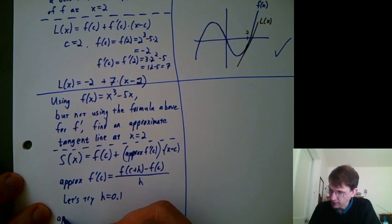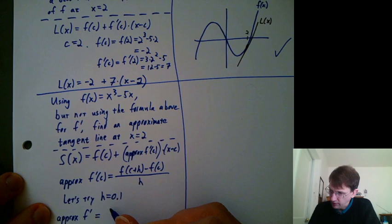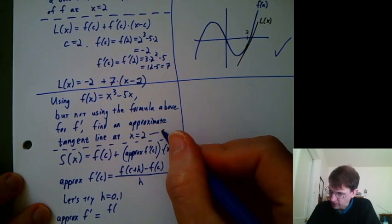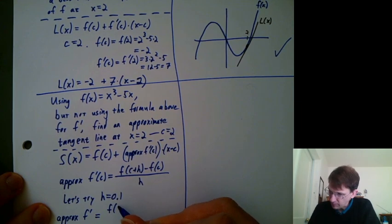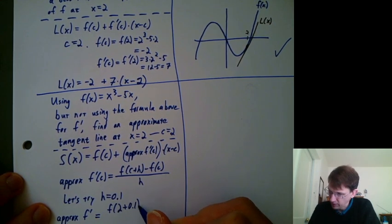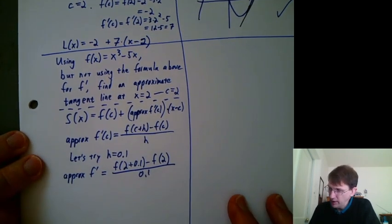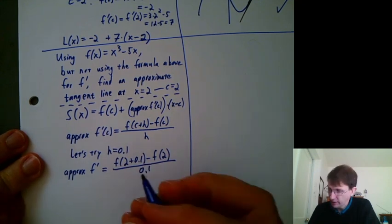So I could say my approximate f' is, I'm going to use c = 2 here, [f(2 + 0.1) - f(2)]/0.1. And now I have two ways I could actually evaluate that.